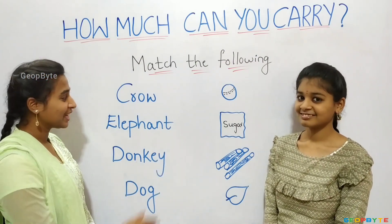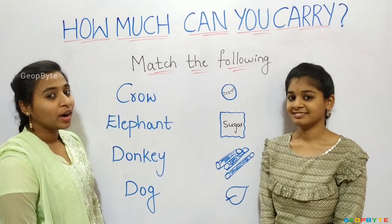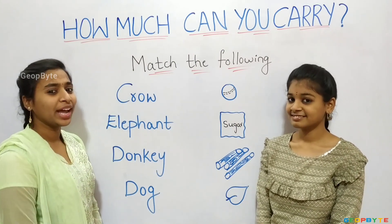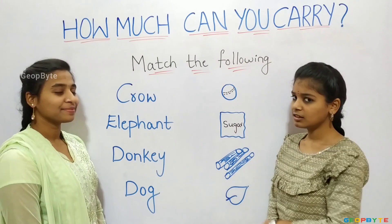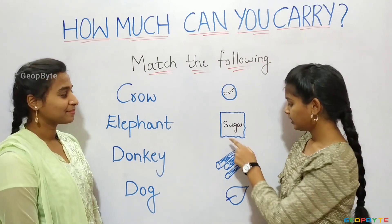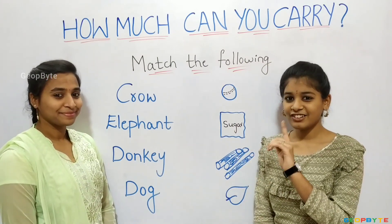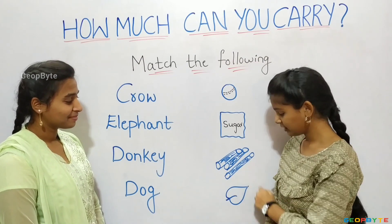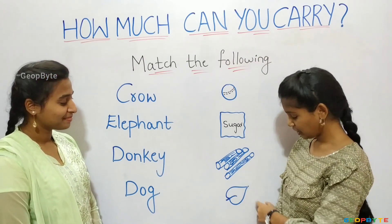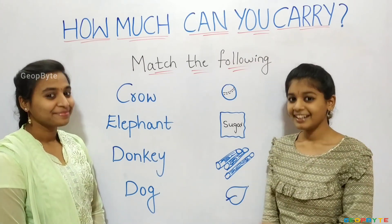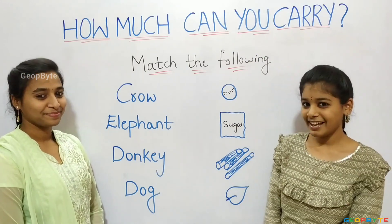First, let us go with crow. What does a crow carry? Ball? No. Logs? No. Leaf? Yes. Now, let us match.